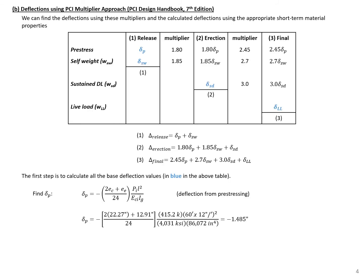For the next part of this problem, we'll find our deflections using the PCI multiplier approach, which is found in the PCI Design Handbook, 7th edition, from 2010. In this table, we can find the release deflections, deflections at erection, and deflections at final service. The deflections highlighted in blue are our base deflections, and then there are multipliers we apply to those base deflections to account for time effects.